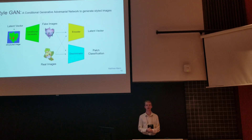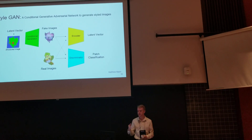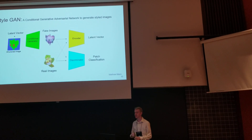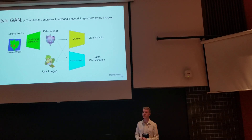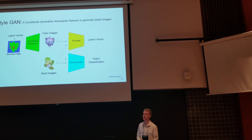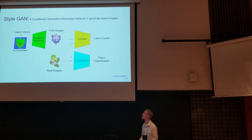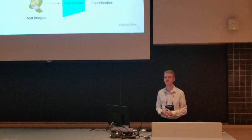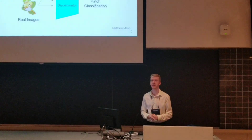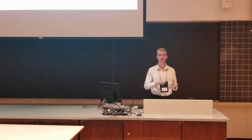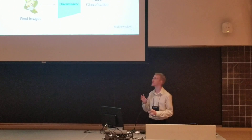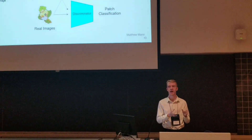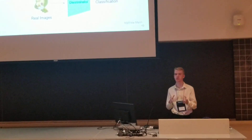Moving on to the StyleGAN, its main objective is to take a structured image using the conditional generator and add styles to make it look like a realistic image. It is similar to the StructureGAN with an encoder, generator, and discriminator, but with three important differences: the generator is conditional, taking in both a latent vector and a structured image; the discriminator uses patch classification, since we only need to discriminate on patches for good styles; and the discriminator is non-conditional, meaning it only looks at final images and not the corresponding structured images.